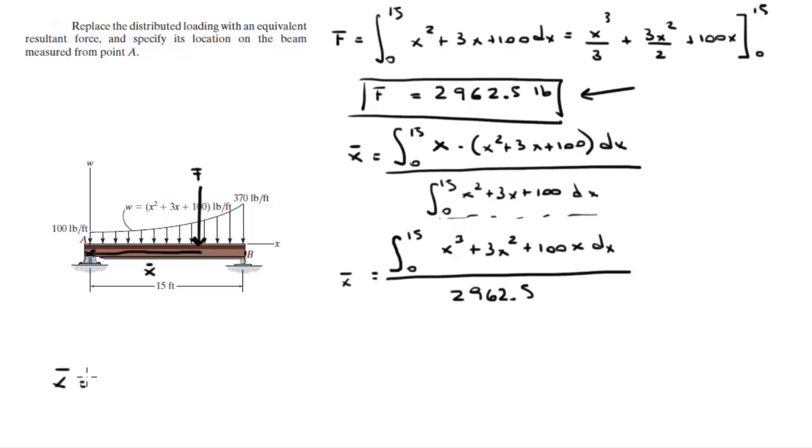So the top becomes x to the 4 over 4 plus x cubed plus 50x squared from 0 to 15. And the bottom stays at 2,962.5.